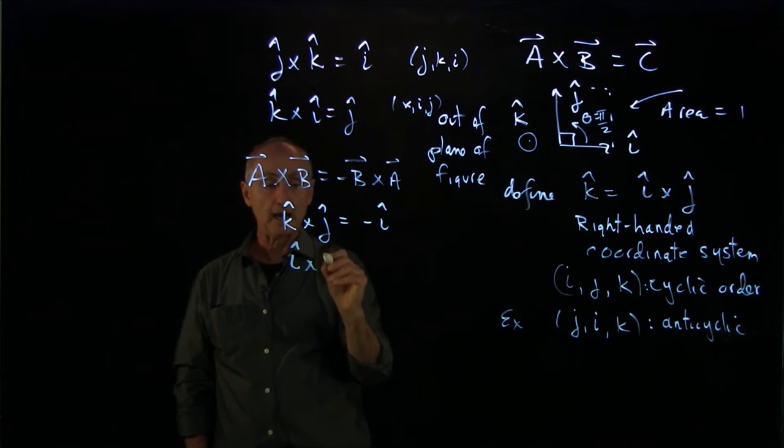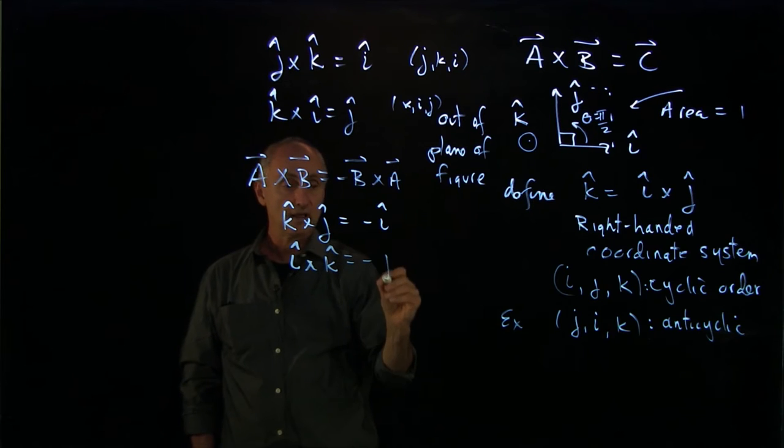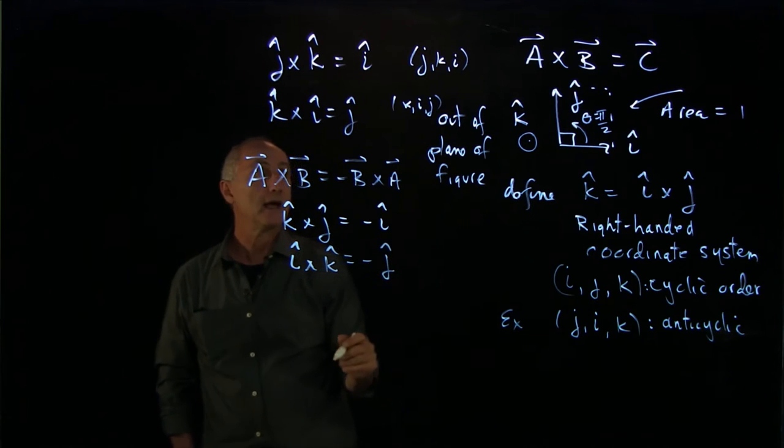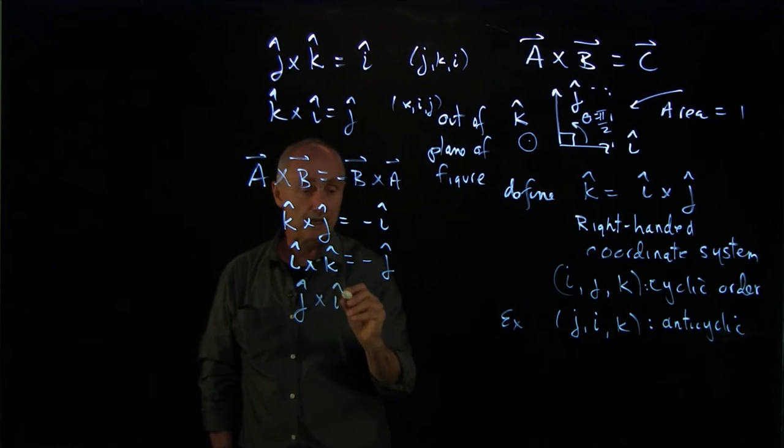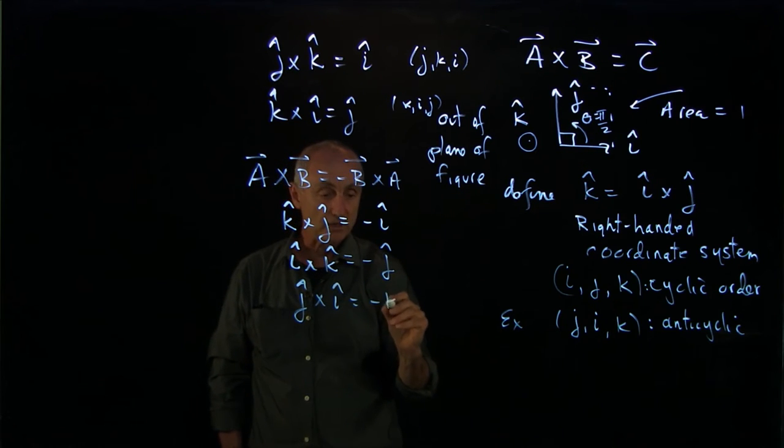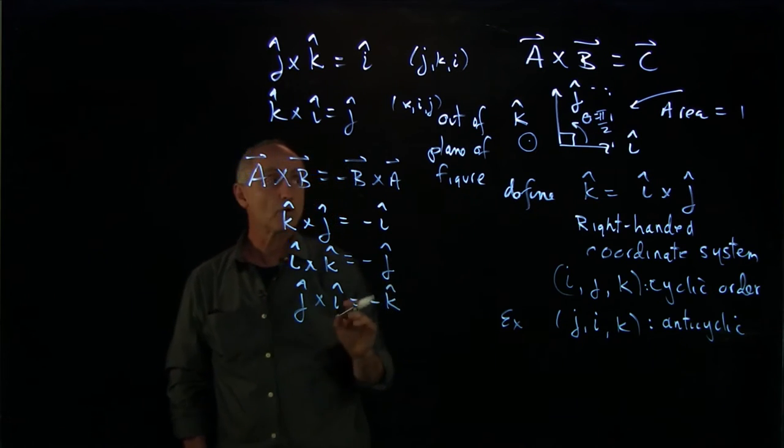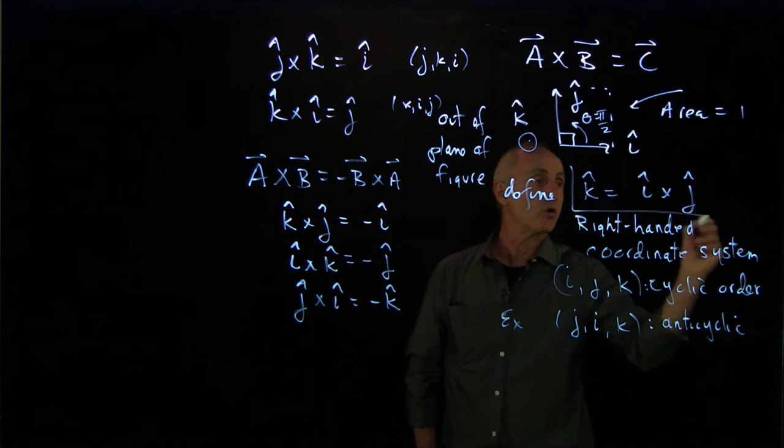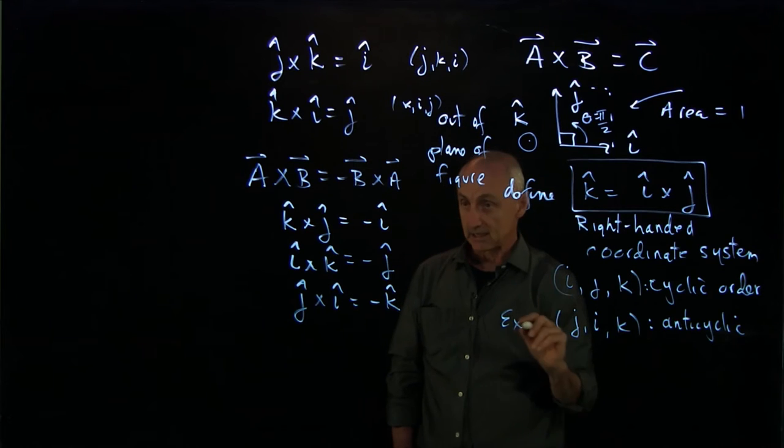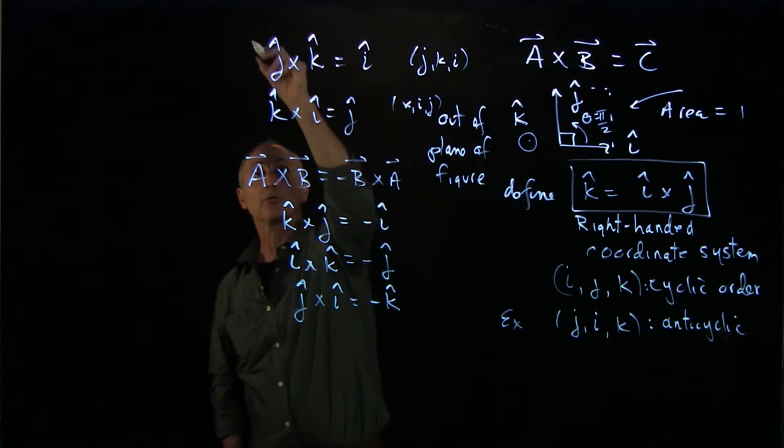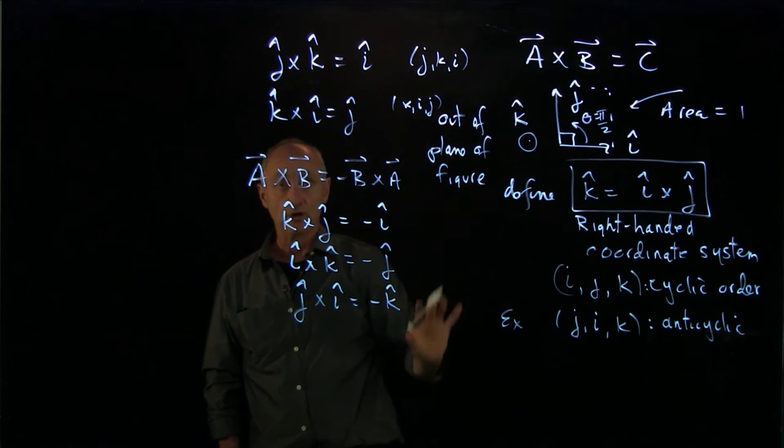Similarly, i hat cross k hat is minus j hat. And lastly, j hat cross i hat is minus k hat. And so, in fact, you only need to know one. And this idea of cyclic and anti-cyclic to be able to write down all of the other six.